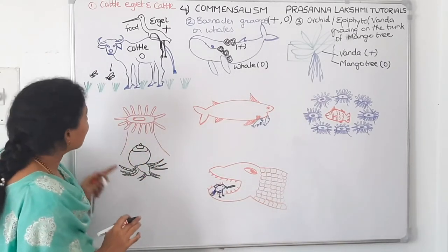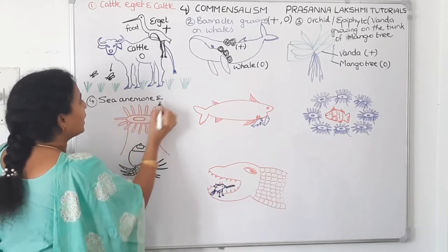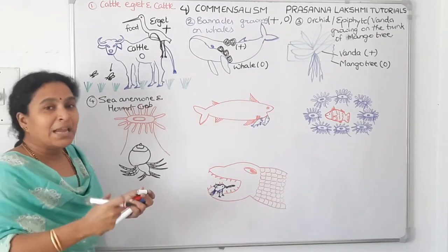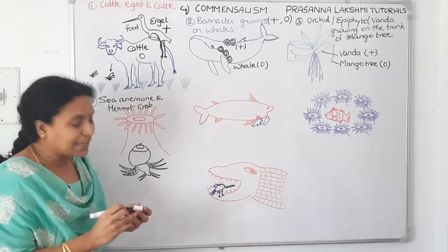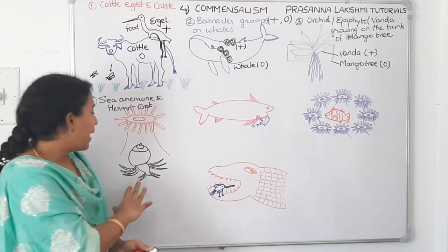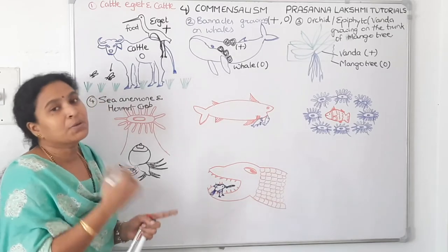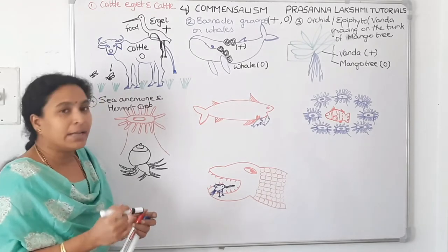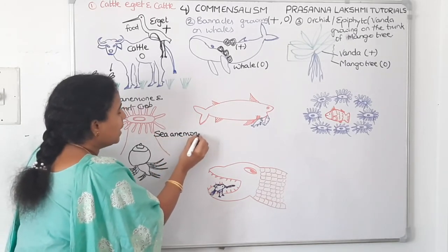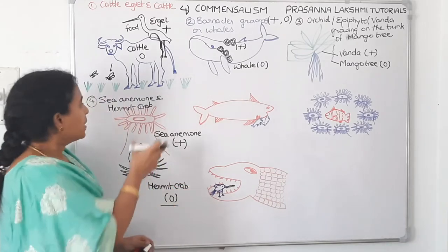The fourth example is sea anemone and hermit crab. The hermit crab picks up the sea anemone and moves along with it. Whatever the hermit crab eats, the sea anemone can get the leftover pieces. Also, since sea anemone cannot move on its own, the hermit crab transports it from place to place. So for sea anemone the interaction is positive, and for hermit crab it is neither beneficial nor harmful — neutral.